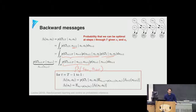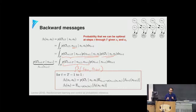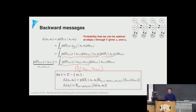The β messages relate to the value functions introduced earlier. The optimal value function V*(s) says: if I'm at state s and execute an optimal policy, the expected cumulative discounted returns equal a certain value. The Q function Q*(s, a) fixes state s and action a, then says the return from following the optimal policy afterwards. So β_t(s_t) is similar to V and β_t(s_t, a_t) is similar to Q.